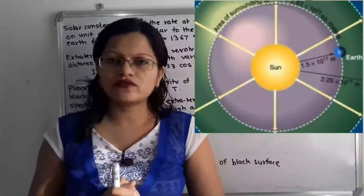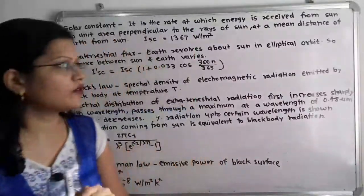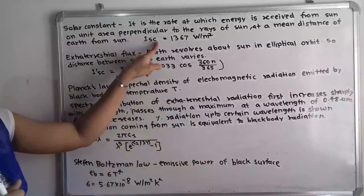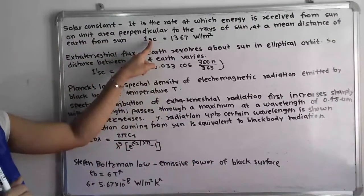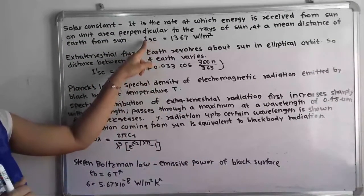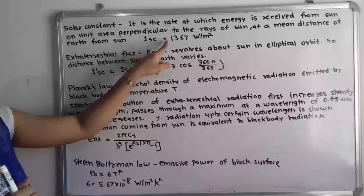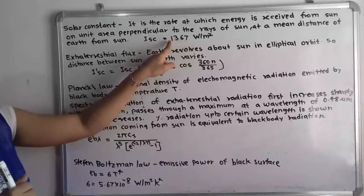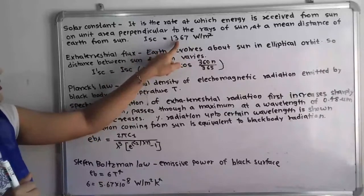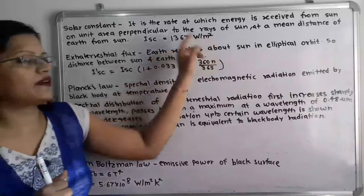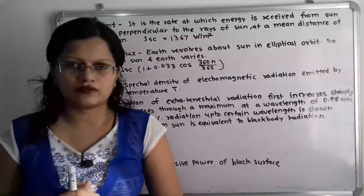What is the notation for this solar constant? It is I_SC, where SC means solar constant. The value of I_SC is equal to 1367 watts per meter square.